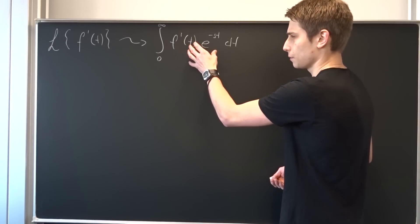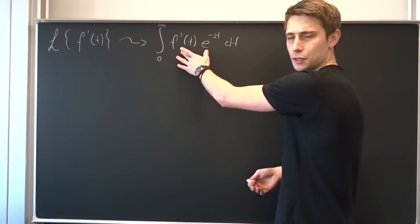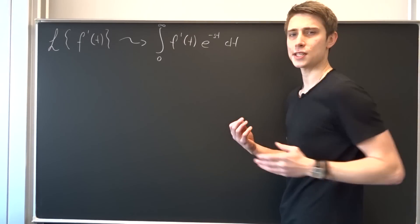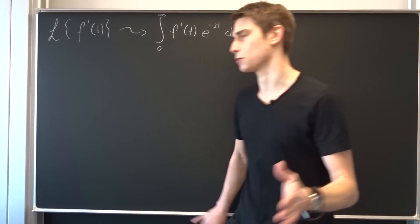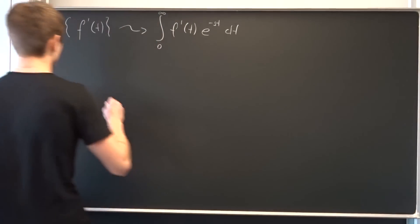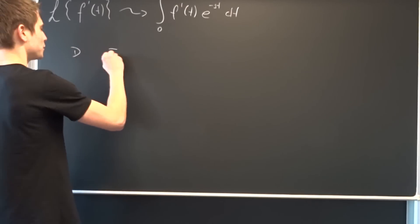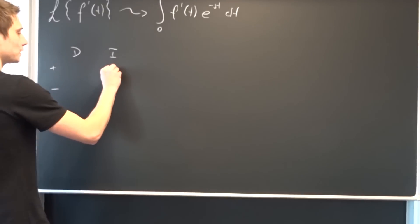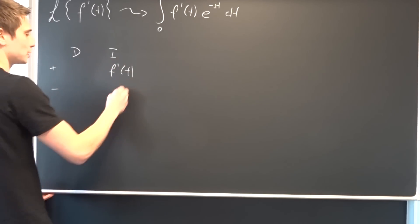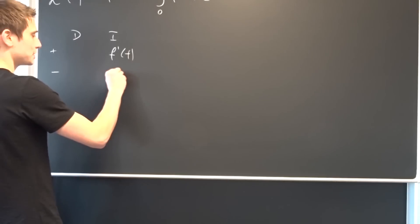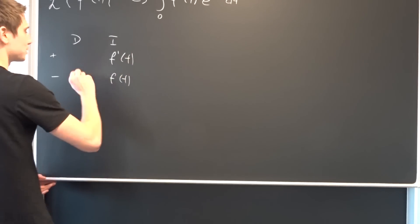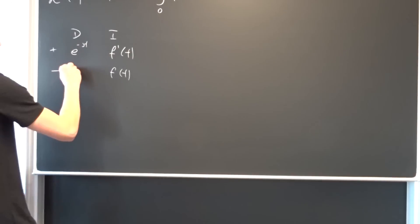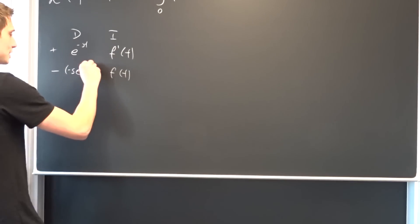So f prime of t should be integrated, and e to the minus st should be differentiated — you will see why in a second. We need something to differentiate and something to integrate, and don't forget the plus-minus sign. So integrating f prime of t gives us f of t, and differentiating e to the minus st gives us minus s times e to the minus st.